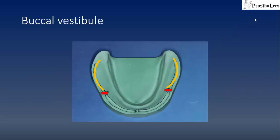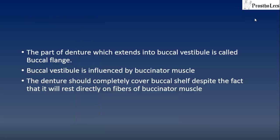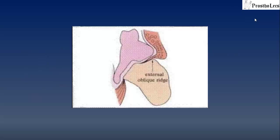The buccal vestibule extends from the buccal frenum to the retromolar pad area. The buccal part of the denture which extends into the buccal vestibule is called the buccal flange. The buccal vestibule is influenced by the buccinator muscle. The denture should completely cover the buccal shelf despite the fact that it will rest directly on the fibers of the buccinator muscle. These fibers are horizontal in orientation and thin and slack in this region, so the muscle fibers on contracting do not dislodge the denture even if extended over the external oblique ridge by a few millimeters.